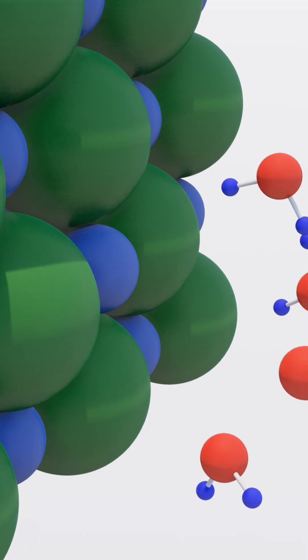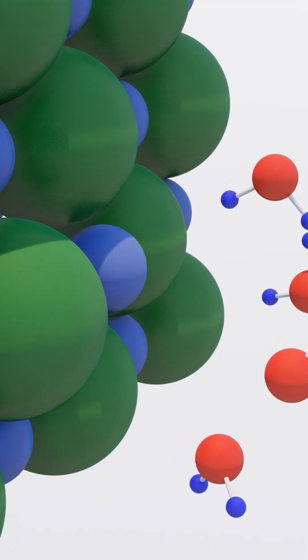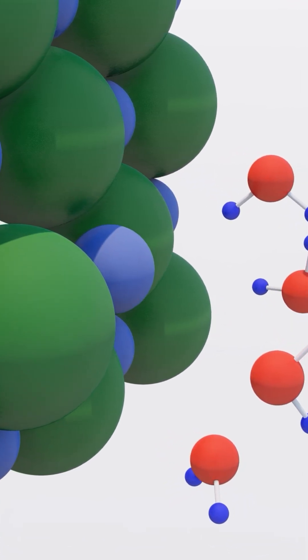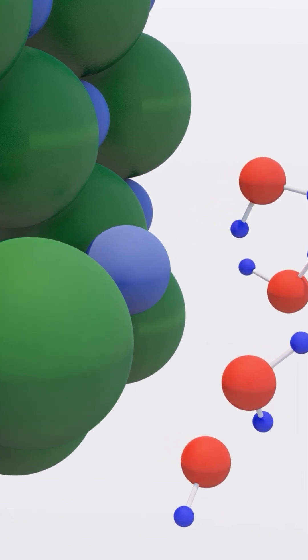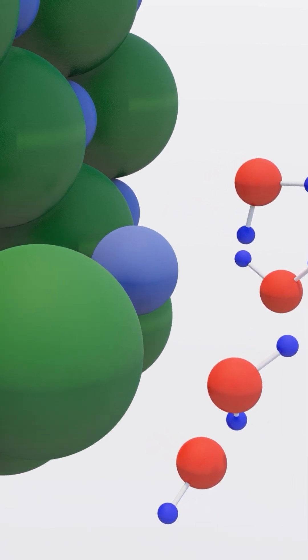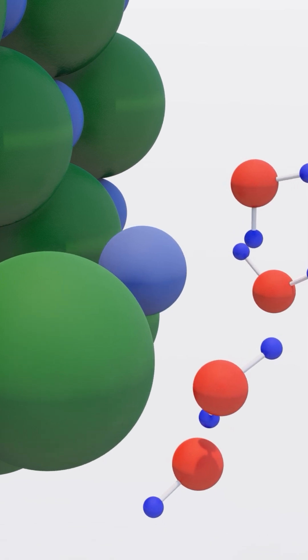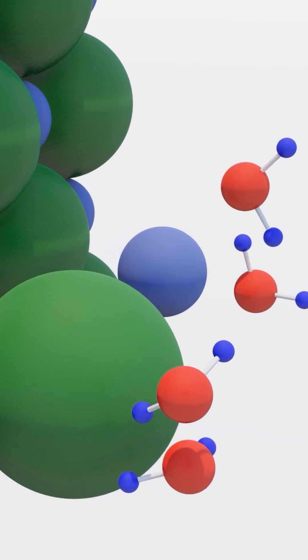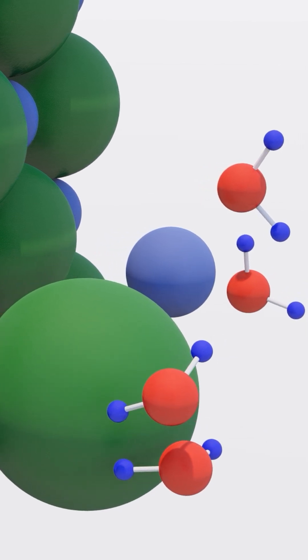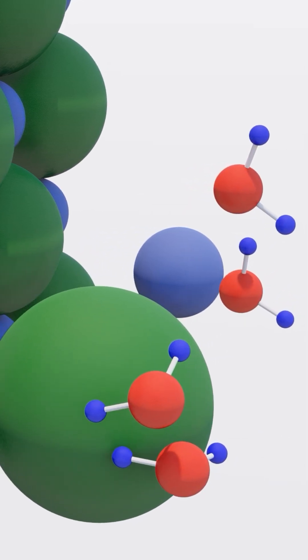When introduced to water, the water molecules are attracted to these ions. The positive part of the water molecule, the hydrogen atoms, are attracted to the chloride ions, whereas the negatively charged oxygen atom is attracted to the sodium ions. This attraction generates a force that is stronger than the ionic bonds holding the sodium and chloride ions together. So the crystal structure starts to break.